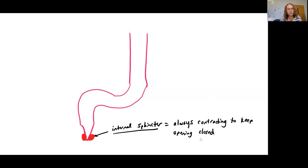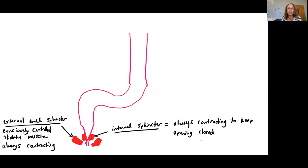These are always contracting to keep the anus closed, but this is going to be an unconsciously controlled group of muscles. And then you have the external anal sphincter, which is a skeletal muscle that you studied as part of your A&P 1 lab work.